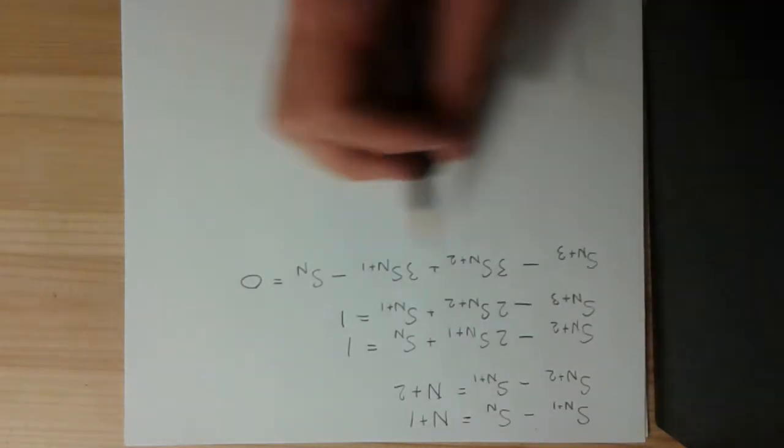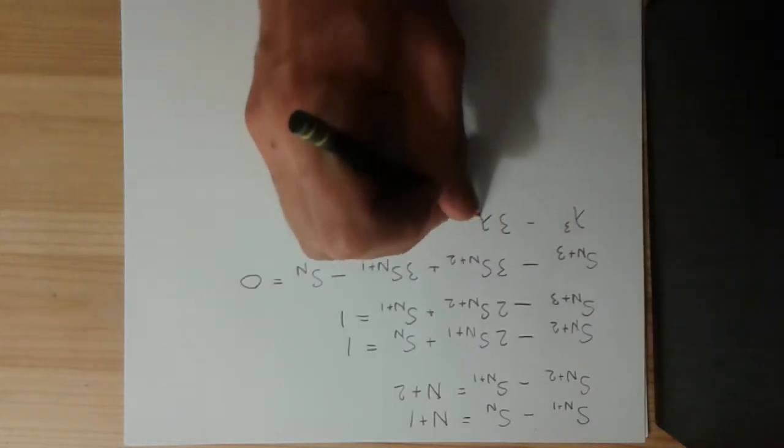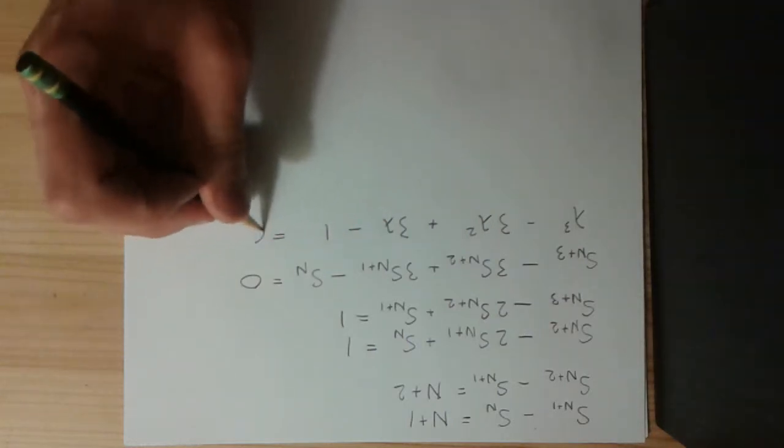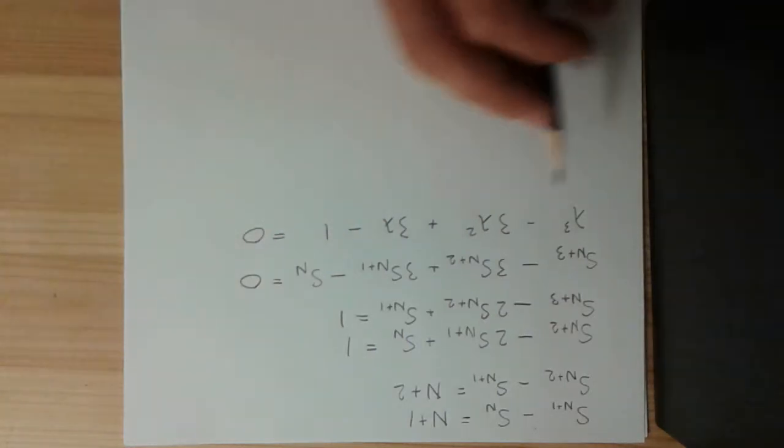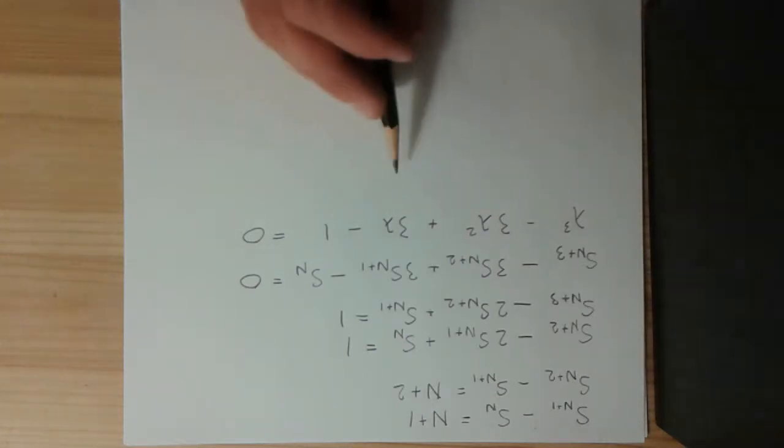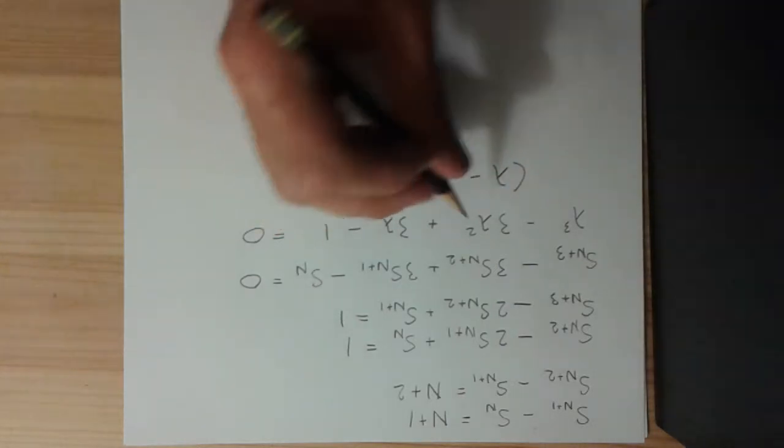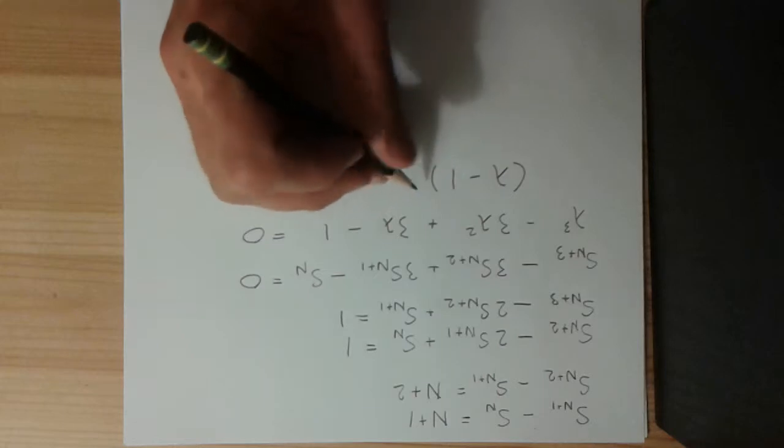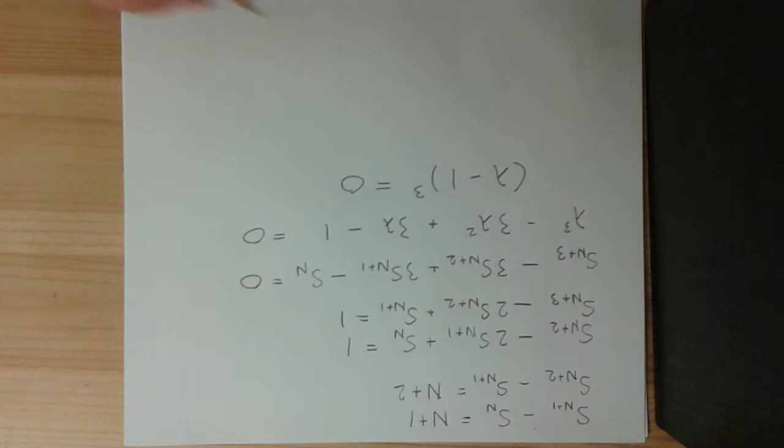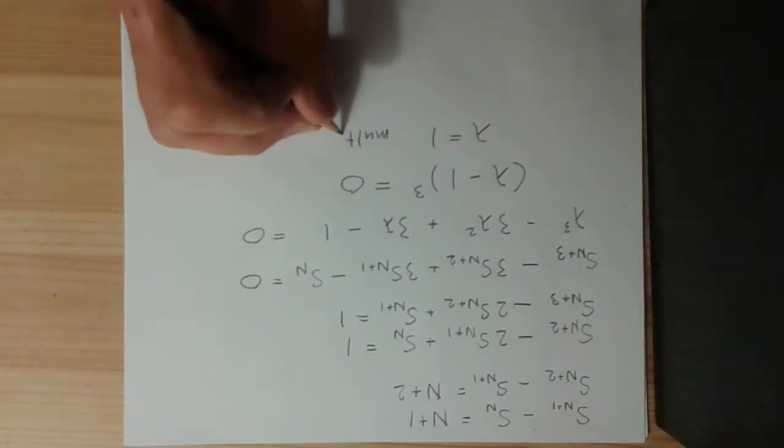So, let's look at the characteristic equation of this. This would be lambda cubed minus 3 lambda squared plus 3 lambda minus 1 is equal to 0. And you should be able to recognize these coefficients from Pascal's triangle. This is just the factored or the expanded version of this. Lambda minus 1 cubed is equal to 0. So, what you see here is that we have lambda is equal to 1 with multiplicity 3.